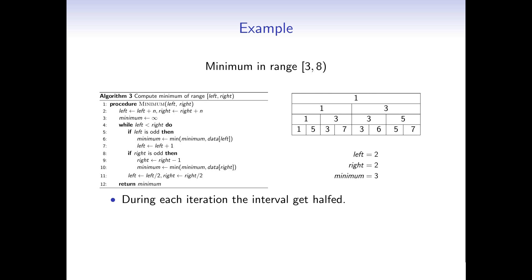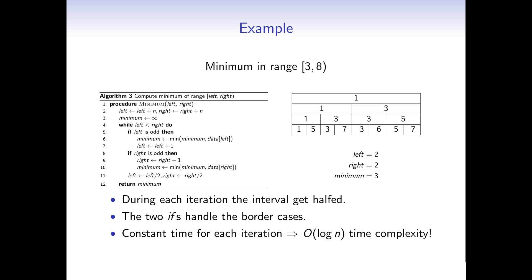Notice that in each iteration the interval gets halved, so we have logarithmic steps. In each iteration we only have two if-checks to handle the border cases, which take constant time. So the algorithm runs in logarithmic time overall, and we accomplish this in only 2n storage.